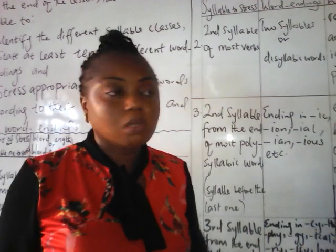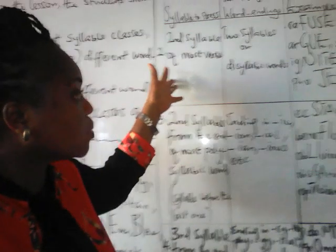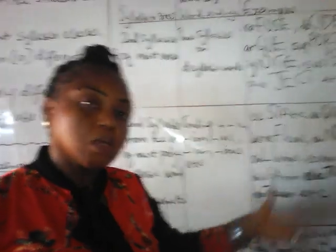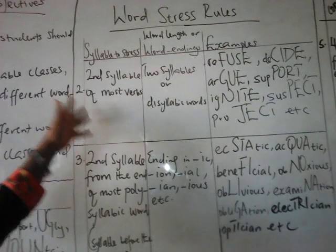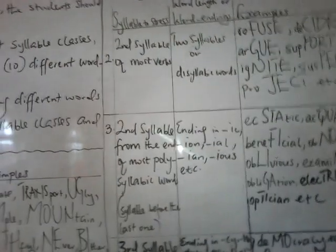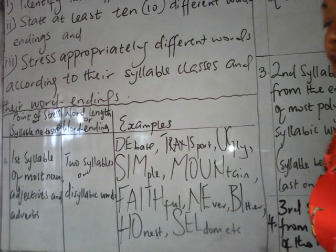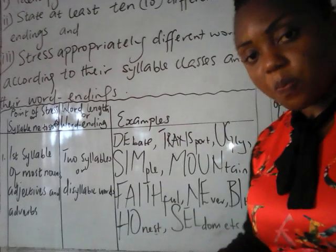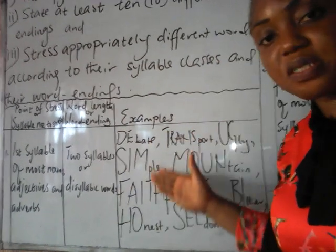A disyllabic word can come in the form of a noun, adverb, adjective, or even a verb. When you have words of two syllables, you have to be careful to know whether it's a noun, a verb, an adjective, or an adverb. If the word happens to be a noun, an adjective, or an adverb, the stress will have to be placed on the very first syllable of that word.